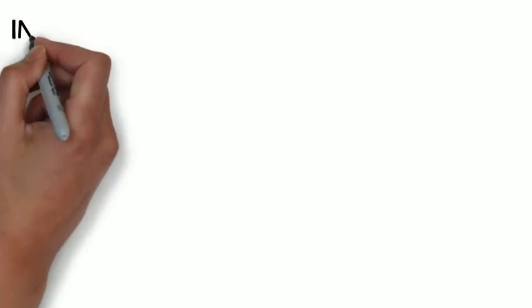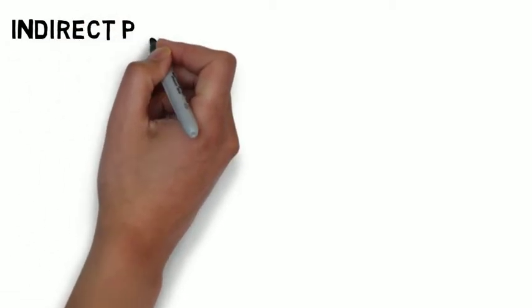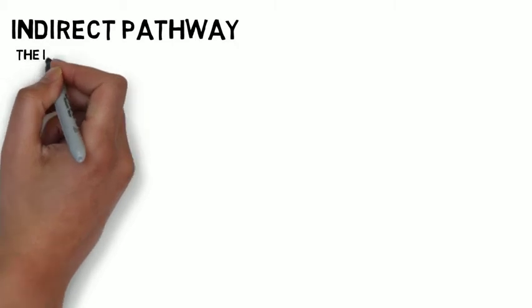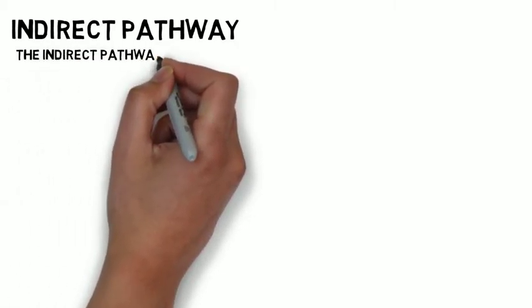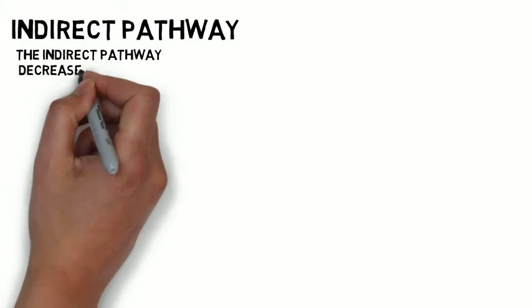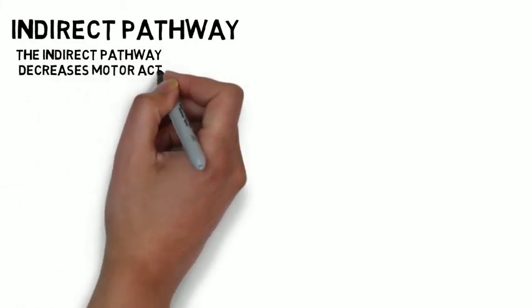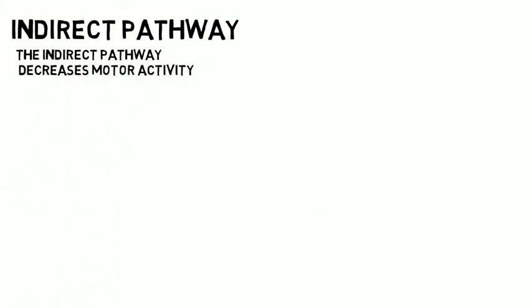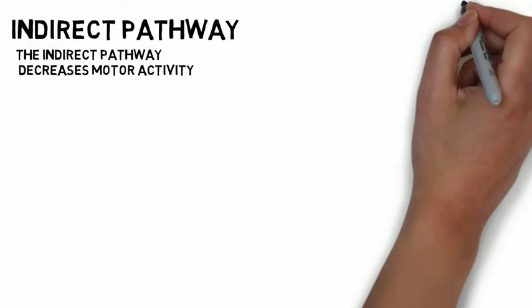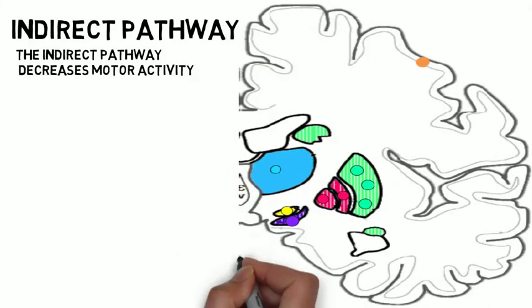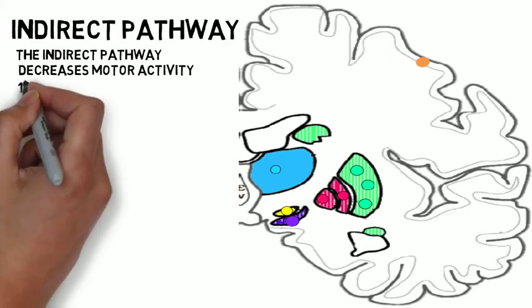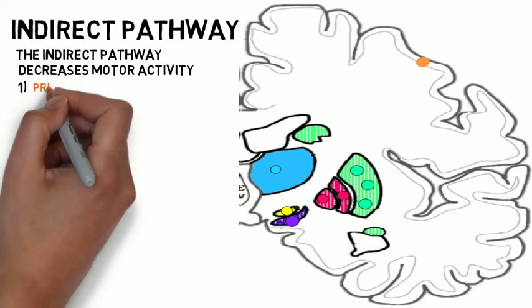The indirect pathway functions to decrease the excitatory input from the thalamus to the cortex, and ultimately decreases motor activity. In this pathway, neurons arising from the primary, premotor, or supplementary motor cortex form synapses with medium spiny neurons in the striatum, typically the putamen.